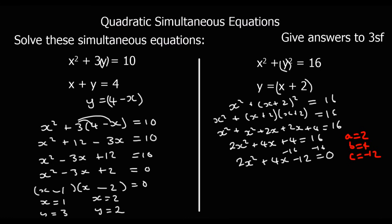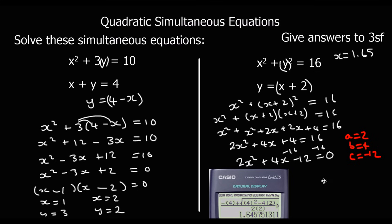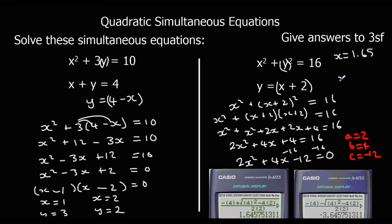These go into the quadratic formula. You do need to show what you typed into the calculator. With a equals 2, b equals 4, c equals minus 12, the calculator gives x equals 1.65 or x equals minus 3.65. To find the y values using y equals x plus 2: when x equals 1.65, y equals 3.65; and when x equals minus 3.65, y equals minus 1.65. Those are our final answers.